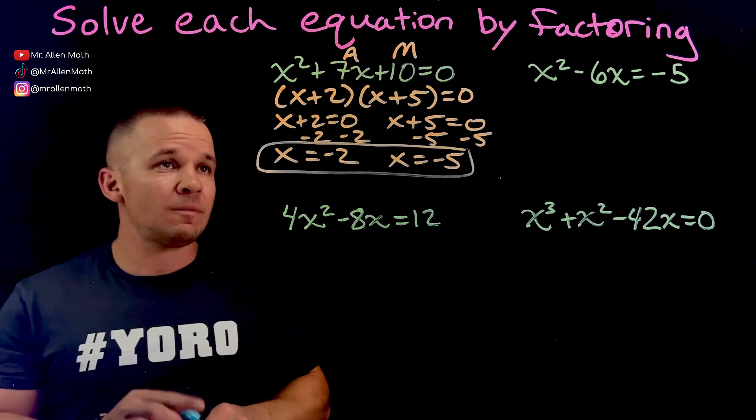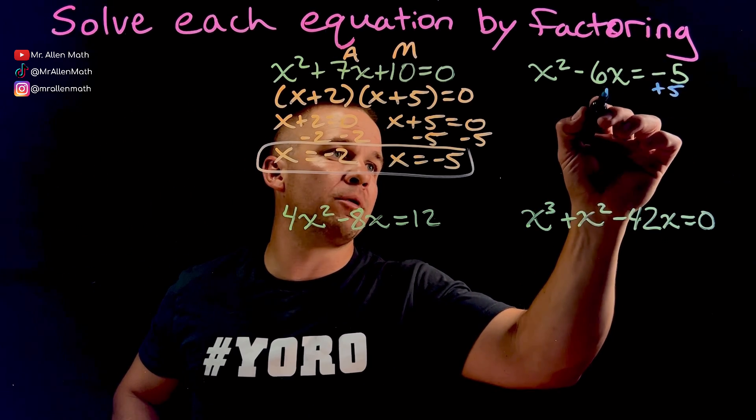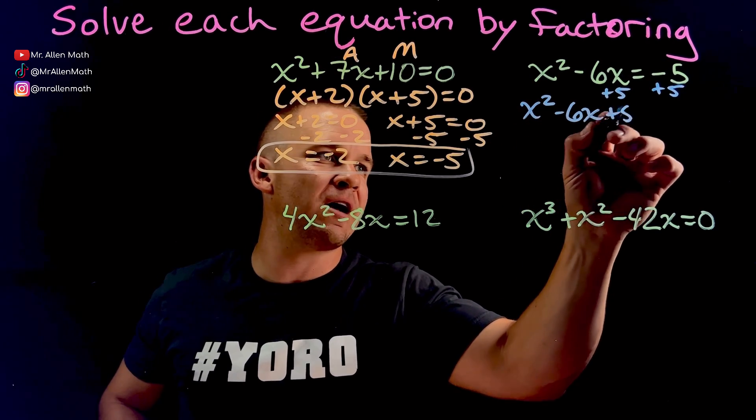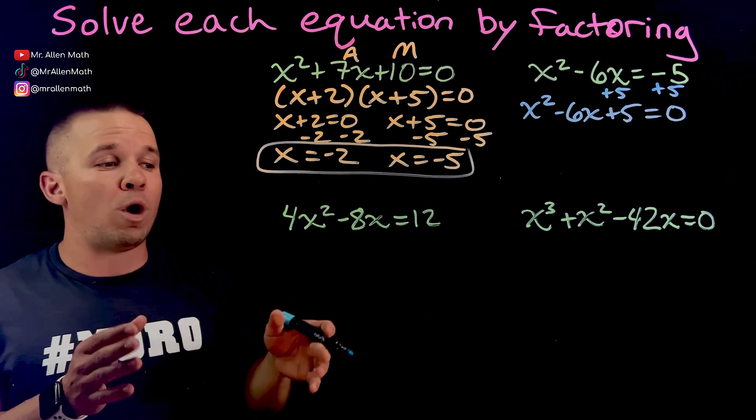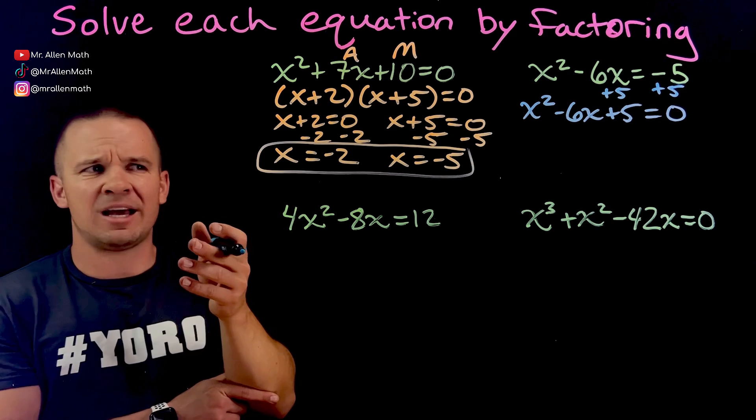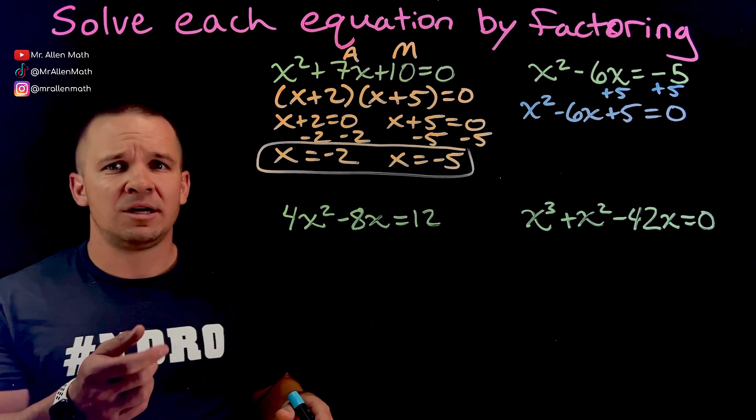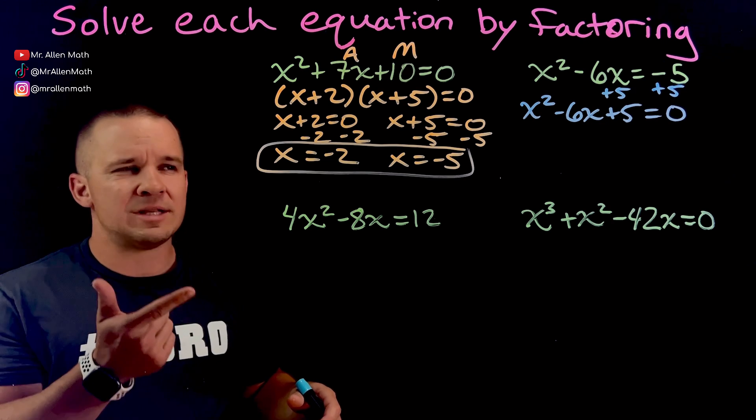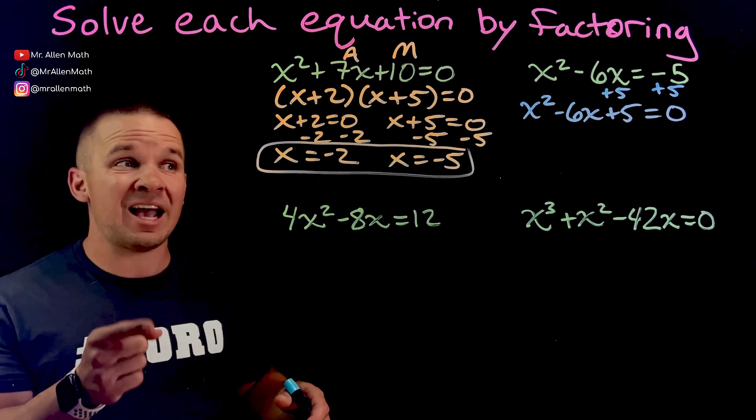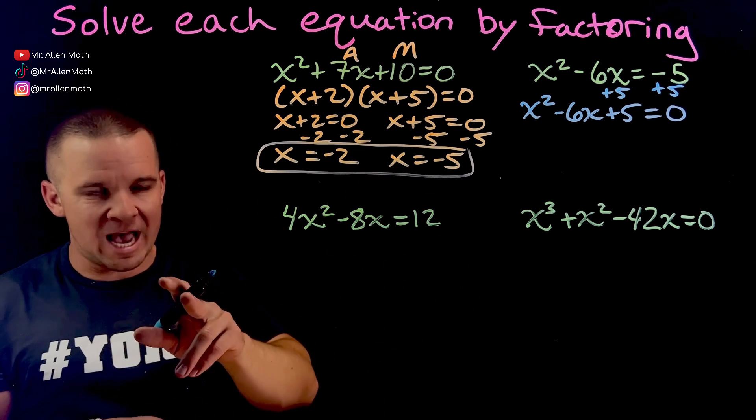Next one. Like I said before, we got to get it equal to 0. So I'm going to add 5 on both sides. Now I'll have X squared minus 6X plus 5 equals 0. And I got to figure out what multiplies to 5 while also adding to negative 6. How am I going to get a positive, negative? Well, there's only two numbers that multiply to 5, right? It's 5 and 1. And that adds up to positive 6, but I want negative 6. What if I did negative 5 and negative 1, because negative times negative multiplied together gives me positive, but will add up to the negative 6. Bingo.